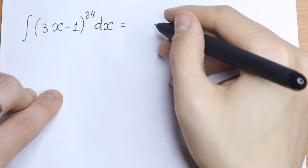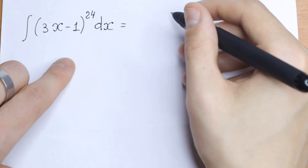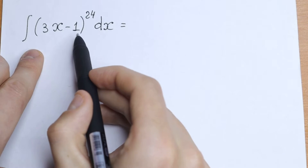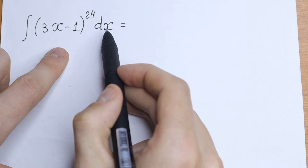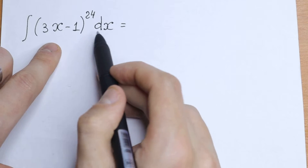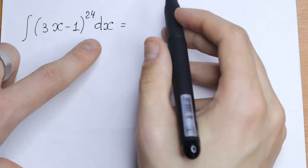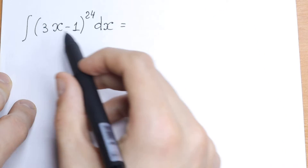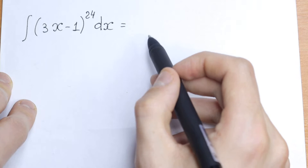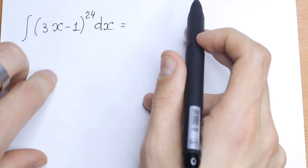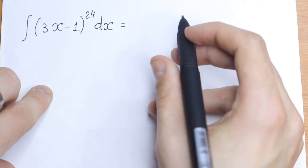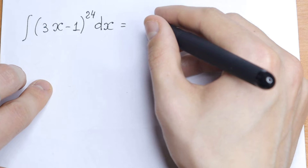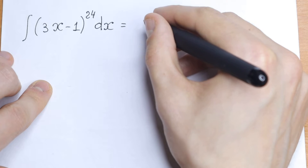I want to show you a really good trick how to solve it. Take a look. We can put this (3x-1) instead of this differential sign. Because if we take a derivative from this and multiply it by one-third, so nothing changes. But then we will have a substitution and it will be a really good case. Take a look at what we will have.